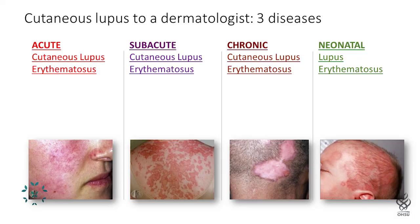When you say lupus to most doctors, they think of systemic lupus and all the organs that lupus can manifest in — I'll be using the abbreviation SLE for systemic lupus. But when you say lupus to a dermatologist, we actually think of a few very separate diseases. There's acute cutaneous lupus erythematosus, a shorter-term situation where the rash comes on with flares of systemic lupus and then fades away when the disease is under better control.